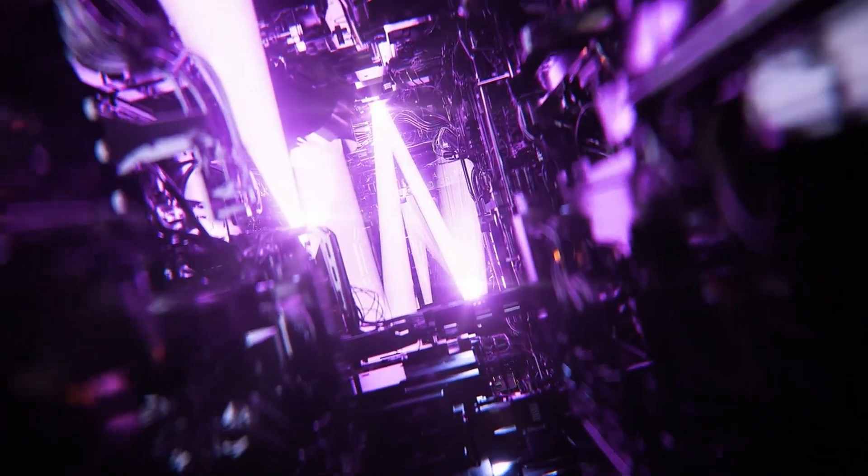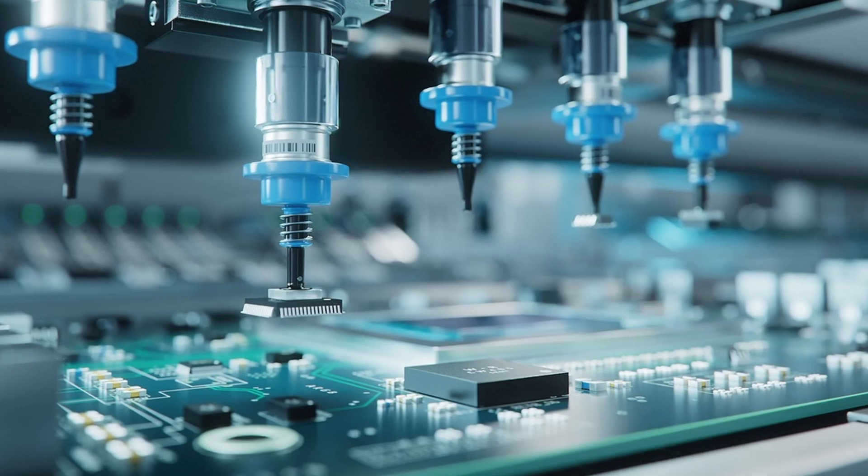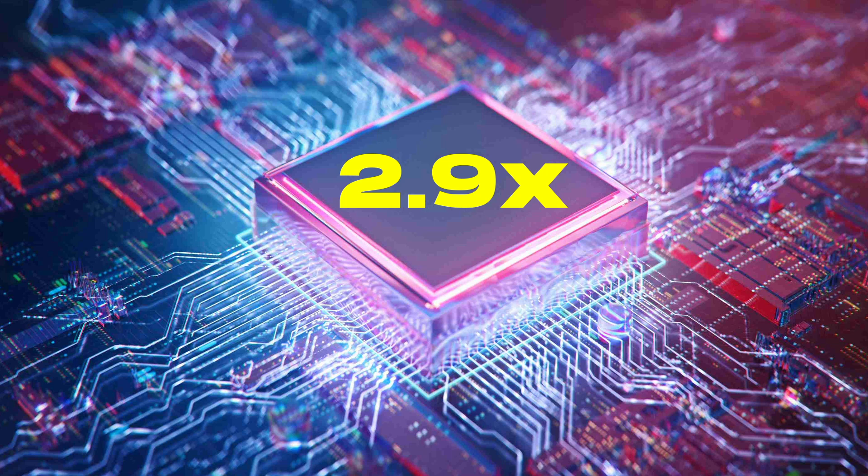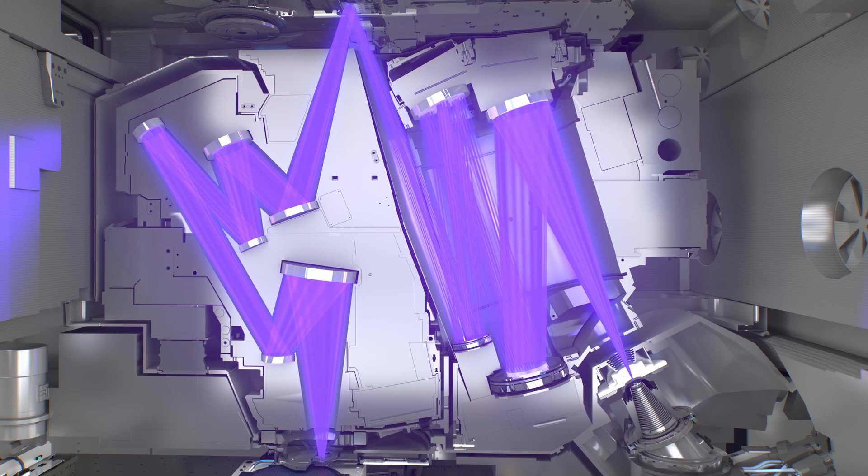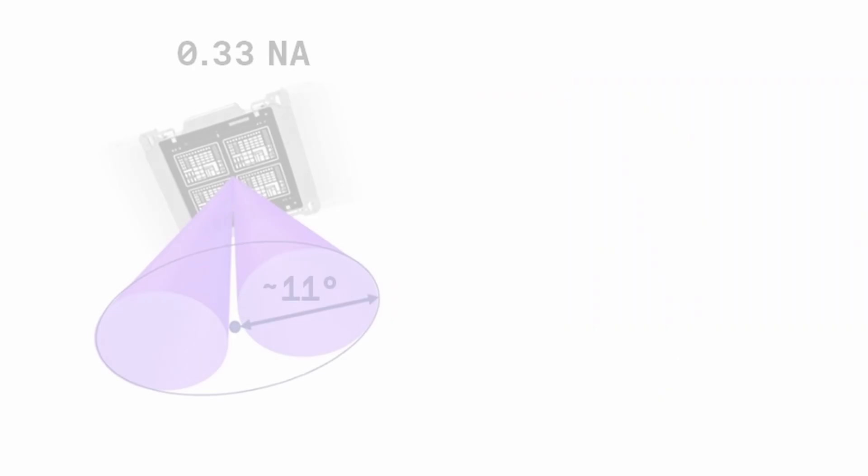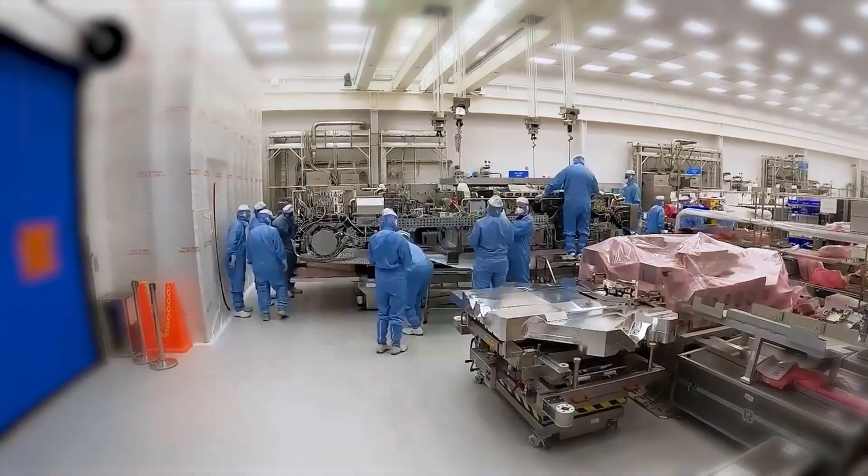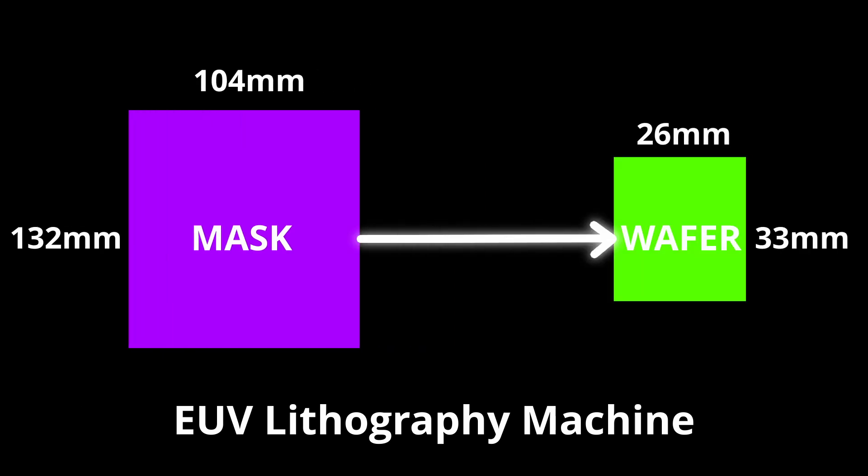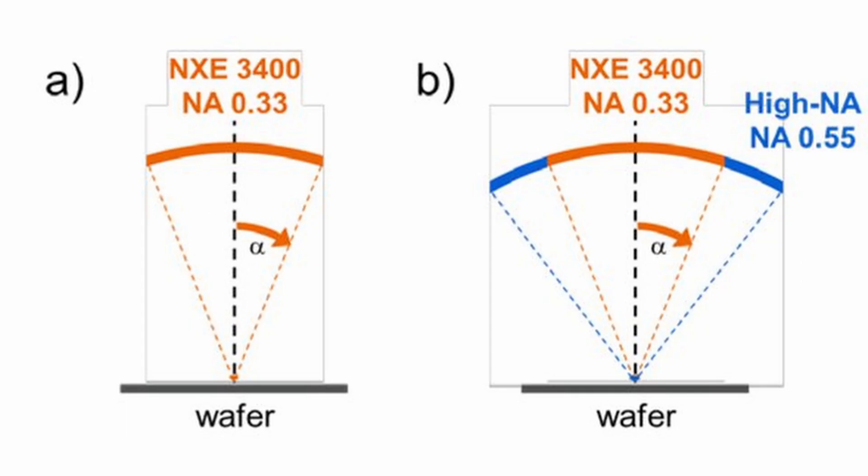That was exactly what ASML did. The leap was from an NA of 0.33 to 0.55. This allows transistors 1.7 times smaller and almost three times the density compared to previous EUV machines, all with fewer masks and much more efficiency. To create high NA EUV and increase the numerical aperture from 0.33 to 0.55, ASML faced enormous engineering challenges. In the current machines, the mask pattern is reduced by four times before being printed onto the wafer. Implementing this increase in NA meant using bigger mirrors, but the bigger mirrors increase the angle at which light hit the reticle, which has the pattern to be printed.